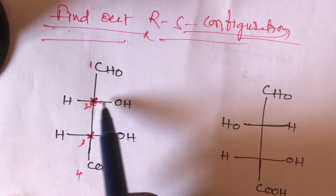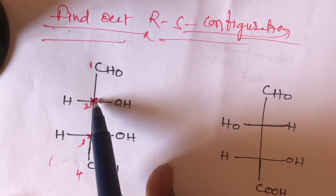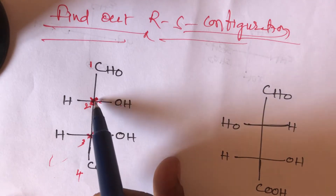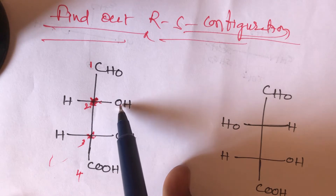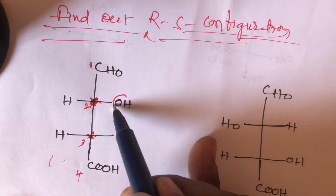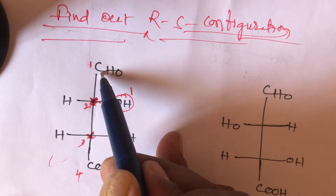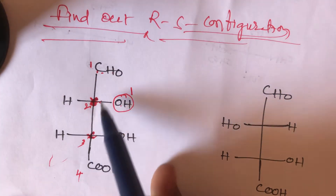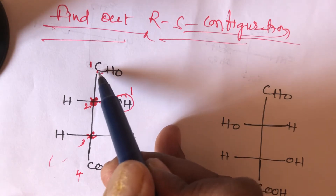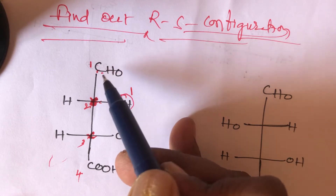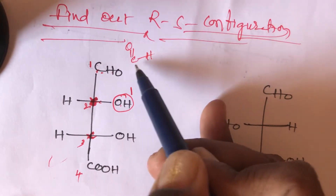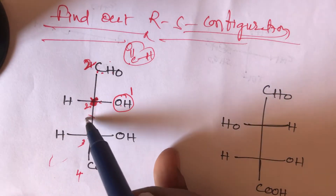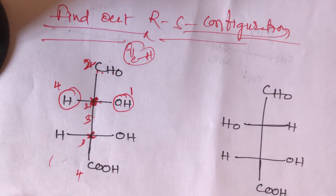At the second carbon (chiral carbon), it is directly attached to four different groups: one OH group, one hydrogen, a CHO (aldehyde) group on the left side, and the complete bulky group below. First priority goes to the OH group because oxygen has the larger atomic number. Second priority goes to the CHO group — since CHO has a C=O double bond, it takes second place. Third priority goes to the complete bulky group, and fourth priority goes to hydrogen.